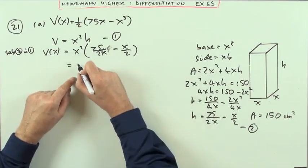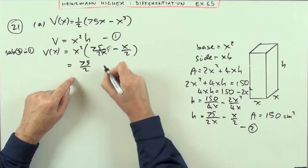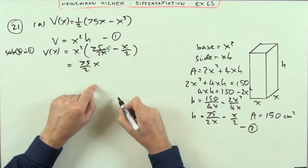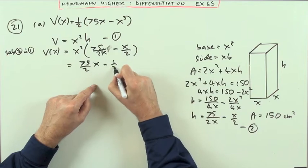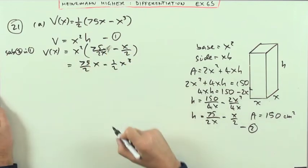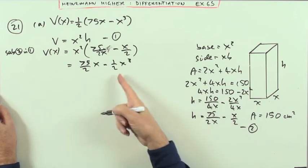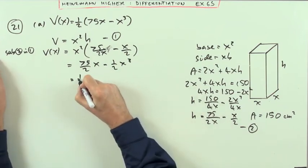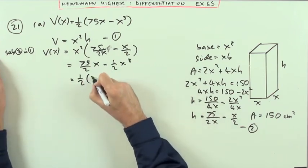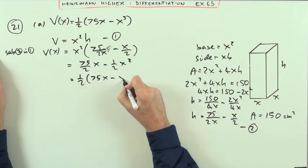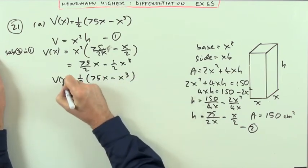Multiplying it out, I've got 75 upon 2, the x will cancel out one of them leaving an x, minus coefficient of half, x cubed. Which is the same thing as that, only with a half taken out. Alright, take out the fraction, 75x minus x cubed. There it is then.